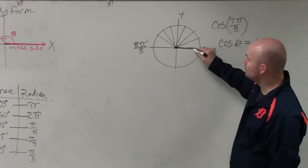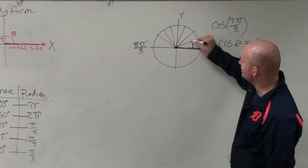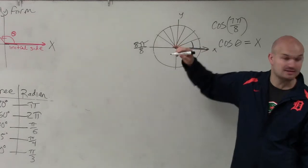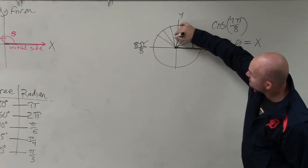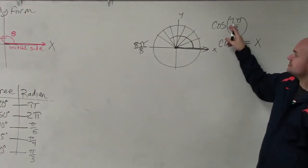So now, if I rotate my angle from my initial side to here, that's π/8. Here it would be 2π/8, 3π/8, 4π/8, 5π/8, 6π/8. And they want us to go to 7π/8.